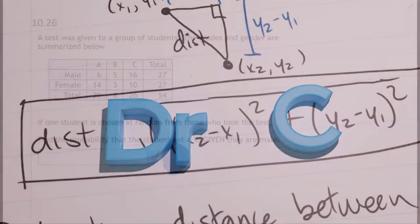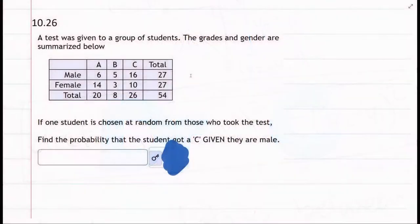We're giving a test to a group of students and we have a table with grades and genders. We want to know: if one student is chosen at random, find the probability that the student received a C given that they're male.